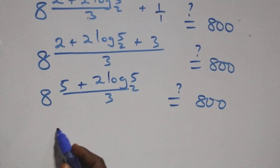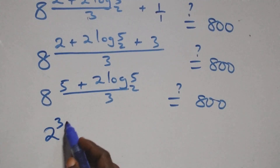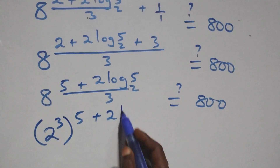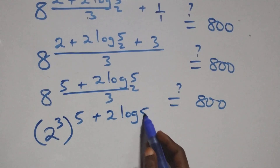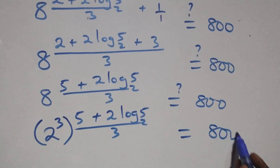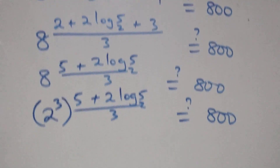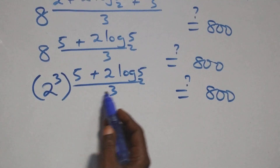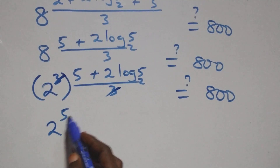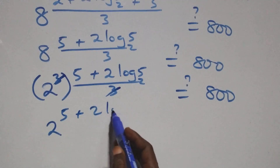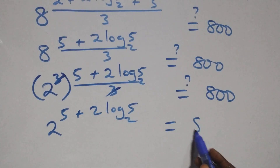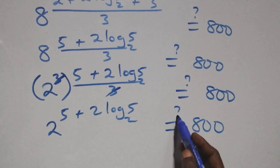We can express 8 as 2 raised to power 3, raised to power (5 plus 2 log 5 base 2) all over 3 — is it equals to 800 on this side. The power multiplies and the 3s cancel each other, so we have 2 raised to power (5 plus 2 log 5 base 2) — is it equals to 800?